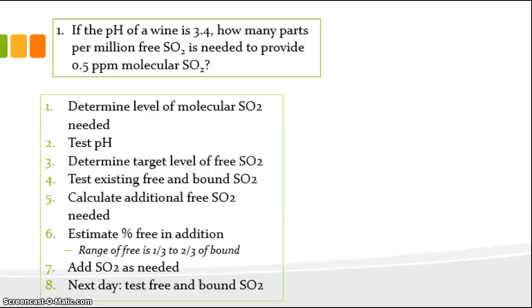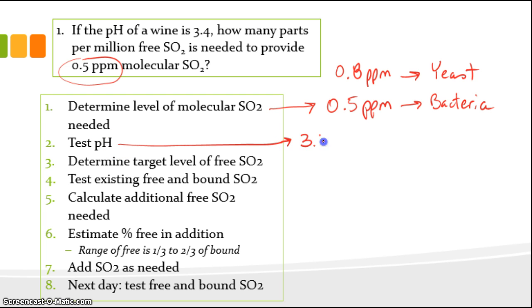So we first want to determine the level of molecular SO2 needed. In this case that's given in the problem right. It says we need 0.5 parts per million. So we determined that. Normally we would decide what organisms we want to protect against and we would select the level of molecular SO2 on that basis. And remember 0.5 gives us protection against bacteria. If we wanted to go higher and get protection against yeast we'd go to 0.8 parts per million of molecular SO2. So in this case it looks like we're worried about bacteria. So the level of molecular SO2 needed is 0.5 parts per million. Step two then would be to test the pH. In this case that is also given in the problem as 3.4.